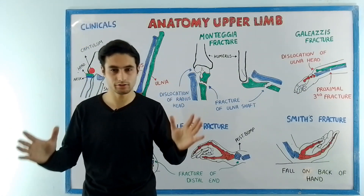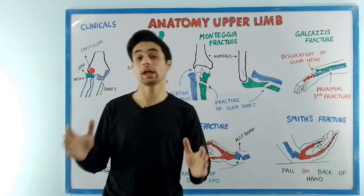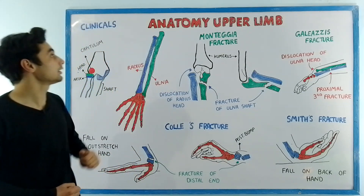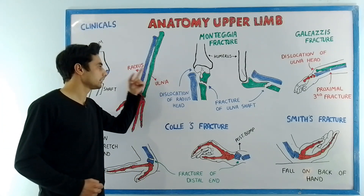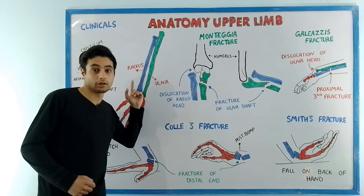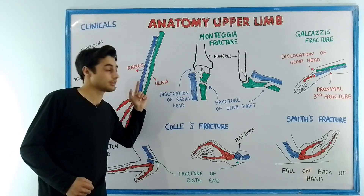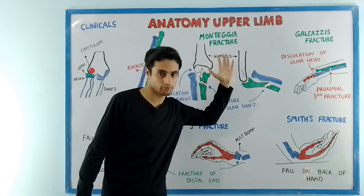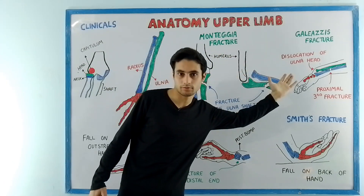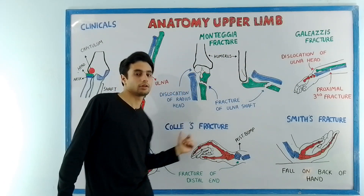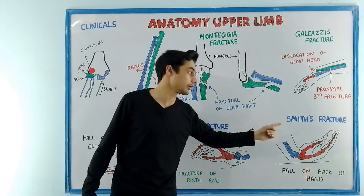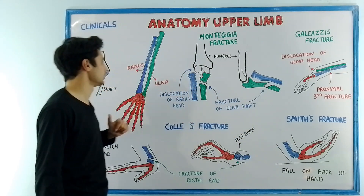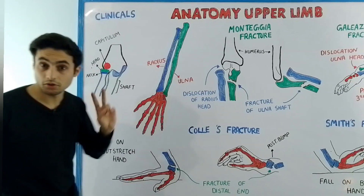Hey everyone, this is Dr. Kazi, and in this video we are going to learn about the clinicals of the bones present in your forearm — the radius and the ulna bone. We're going to discuss the Monteggia fracture, the Galeazzi fracture, the Colles', and finally the Smith's fracture. Let's discuss them one by one.